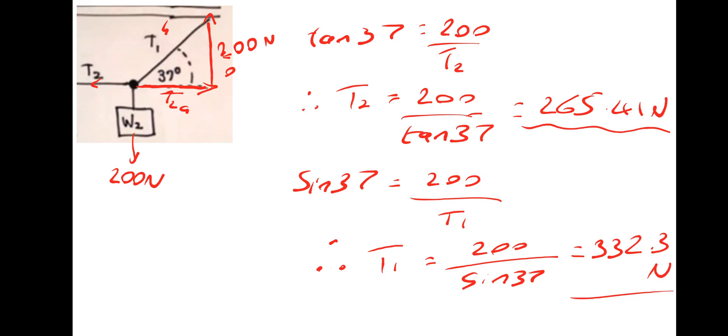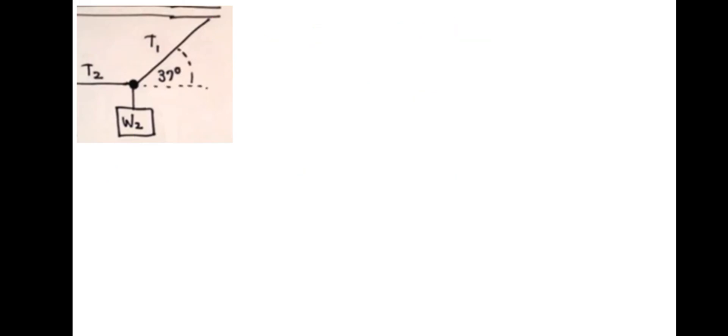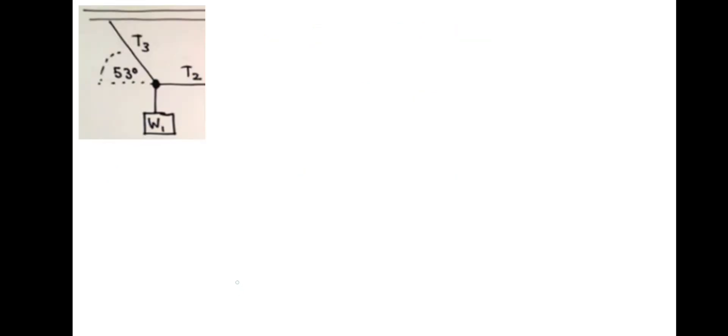Hopefully that's okay. Let's have a look at the other side. So the key to this is the fact that we already know T2, which is 265.41 newtons. So if we've got 265.41 newtons pulling to the right, then the horizontal component of T3 must also be equal to 265.41 newtons.